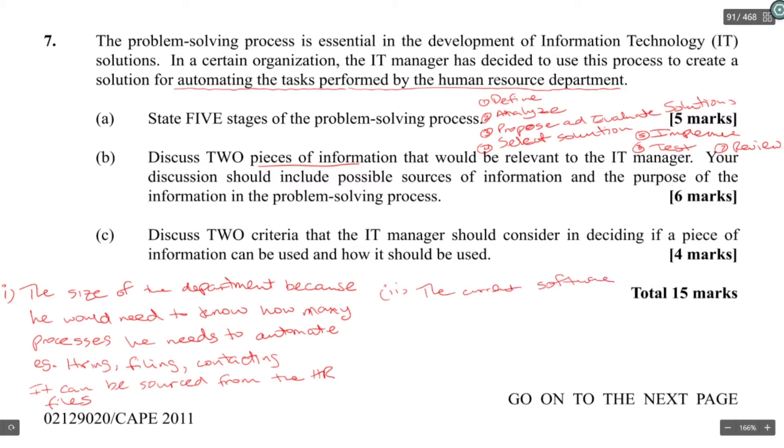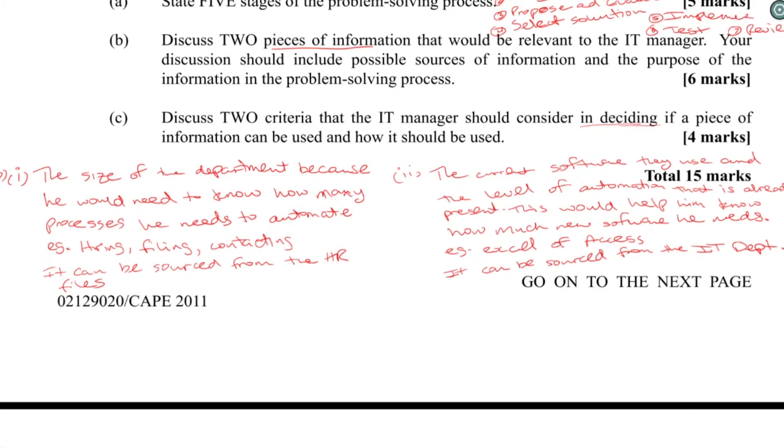Discuss two criteria that the IT manager should consider in deciding if a piece of information can be used and how it should or shouldn't be used. Well, they have multiple criteria to choose. You could choose currency, accuracy, timeliness, all the characteristics of information.